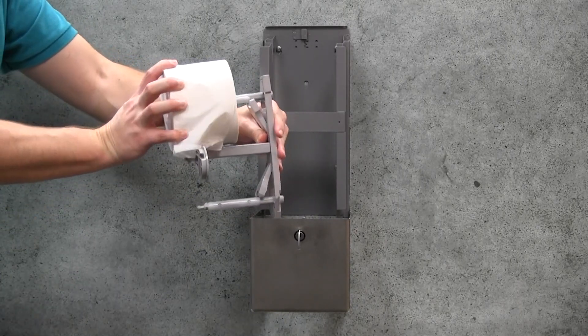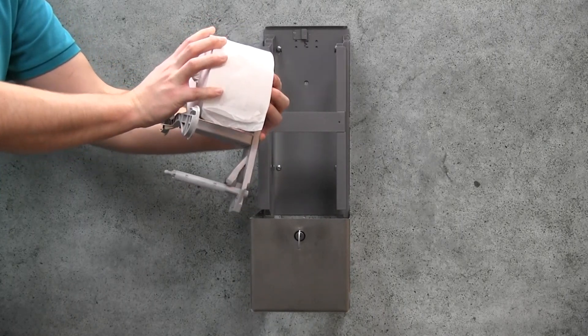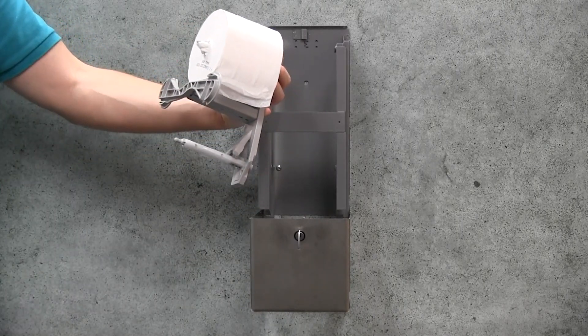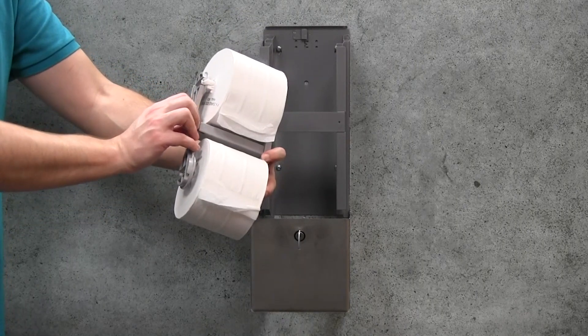Insert the rolls of tissue onto the spindles so that the tissue is dispensed from the top, known as waterfall orientation. Return the arm to its original position.